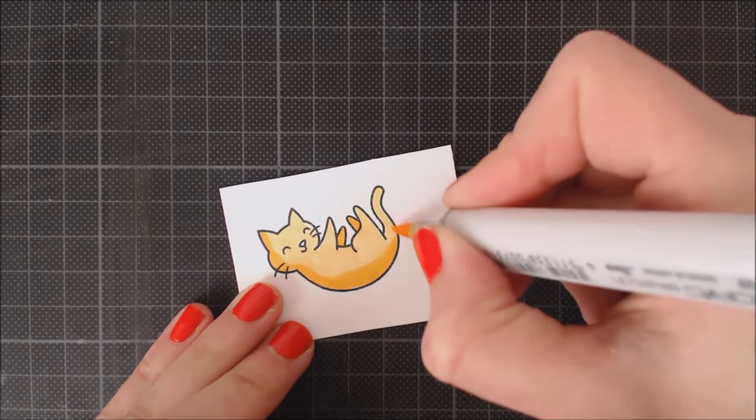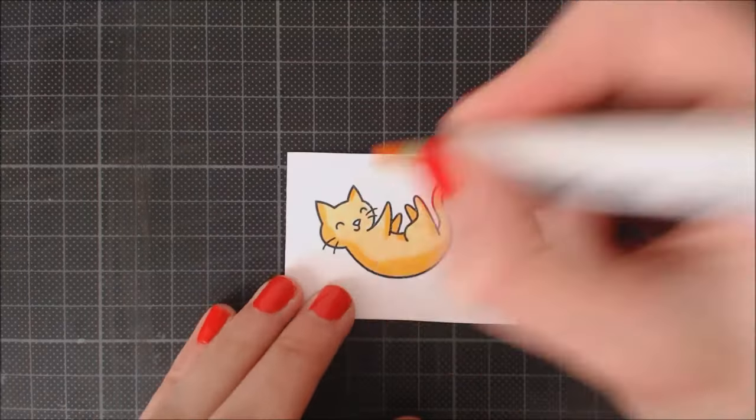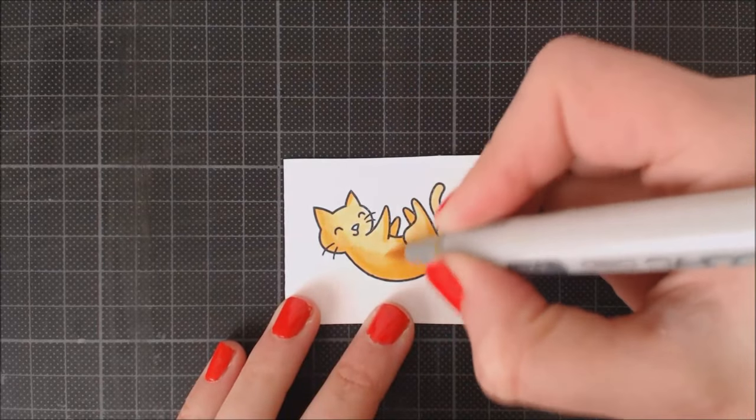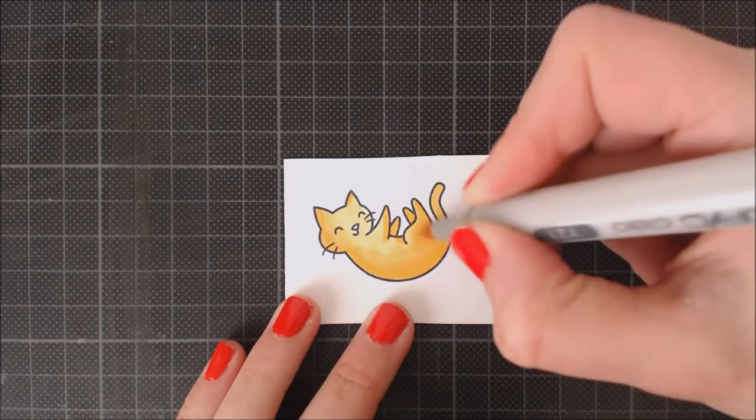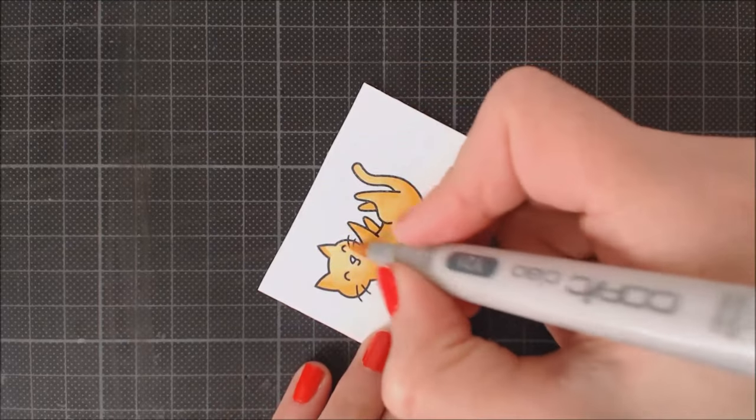I'm using just a pair of markers for my coloring. I'm blending them together, and when it's done I will be adding some marks to the kitty with a darker orange.